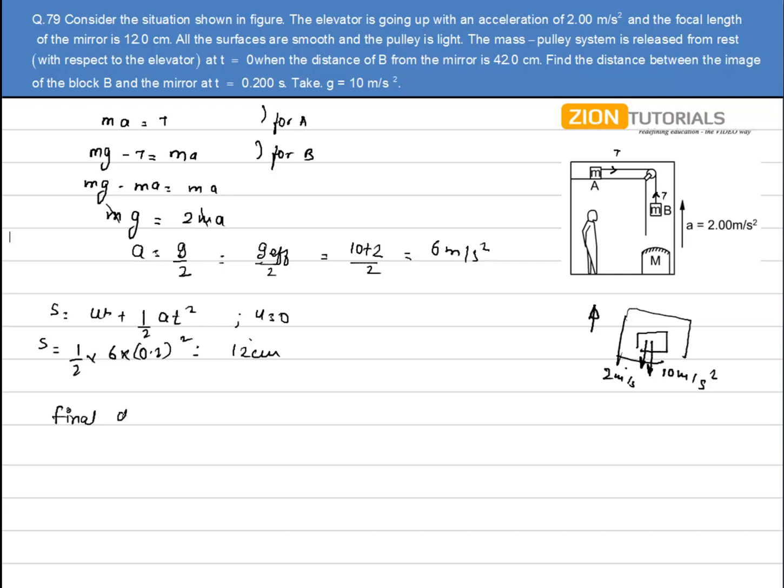Now in 0.2 seconds it traveled a distance of 12 centimeters, so the final distance of B from the mirror will be given by 42 minus 12 and of course with a negative sign because if we are taking the sign convention then it will be negative, so it will be minus 30 centimeters.